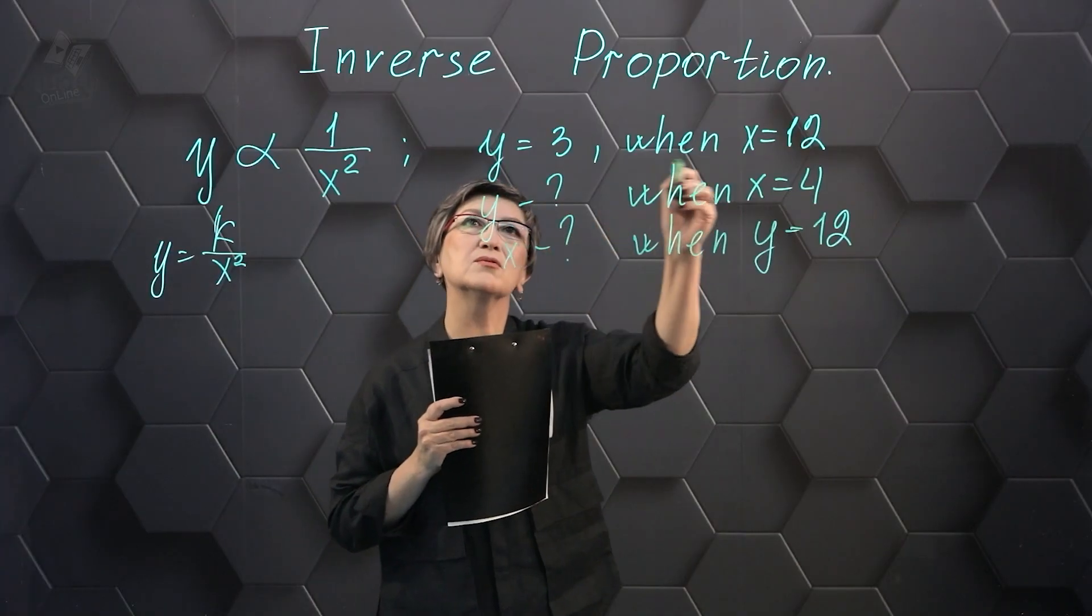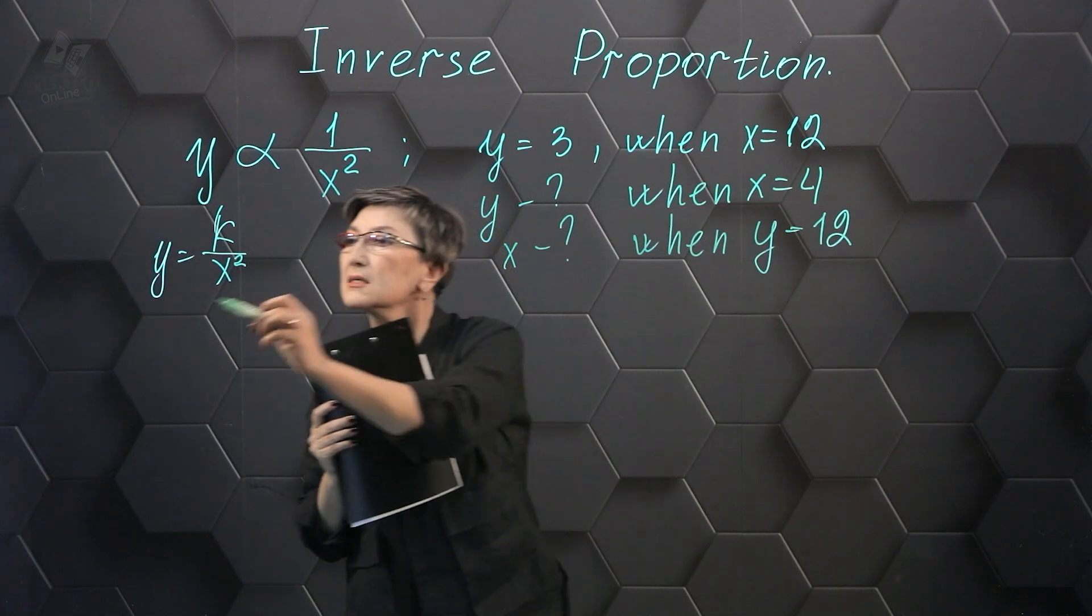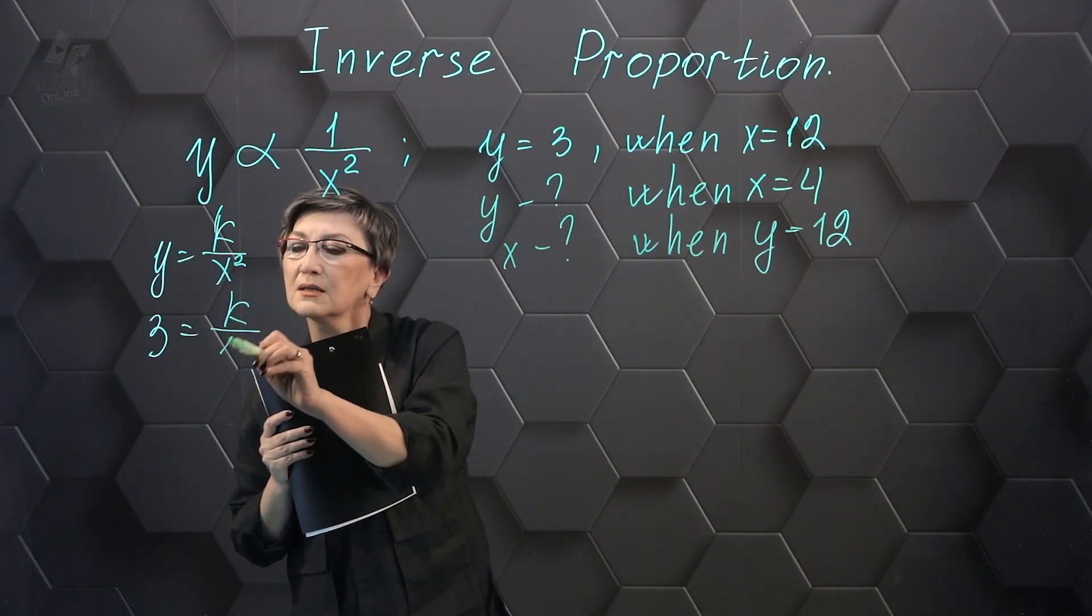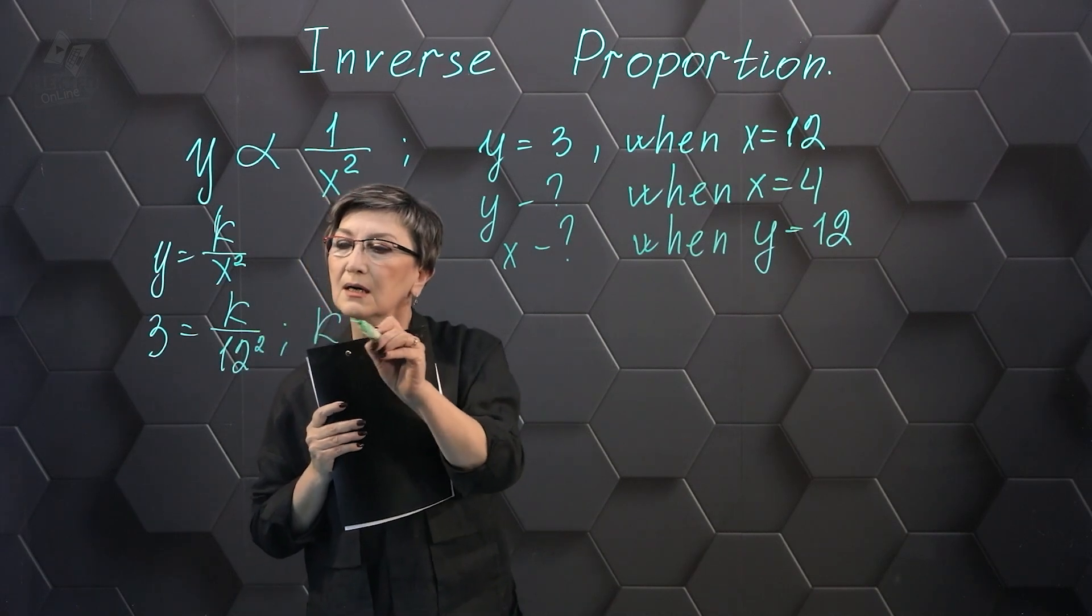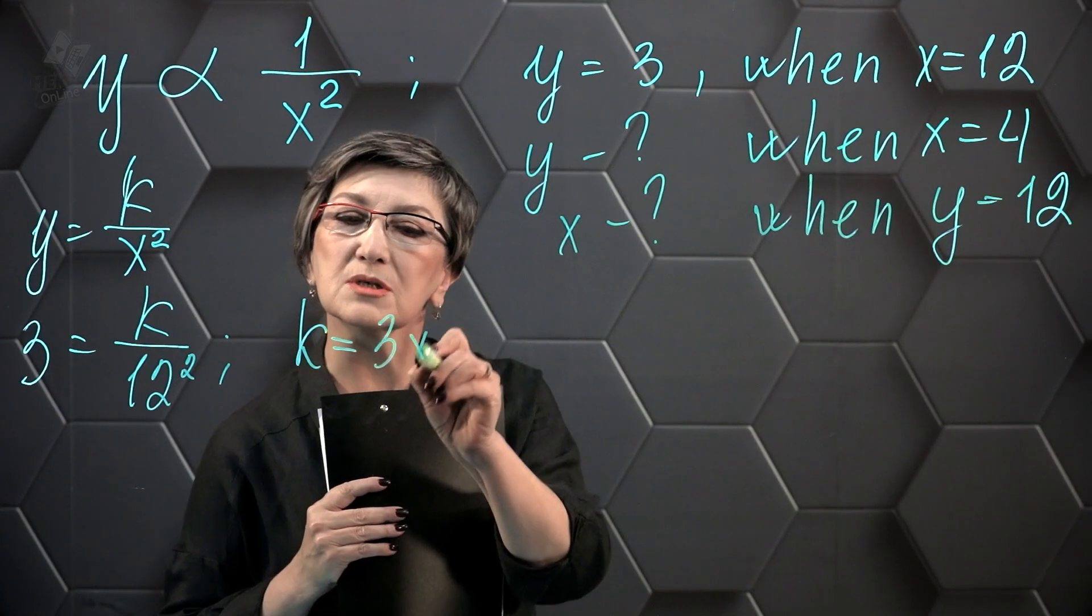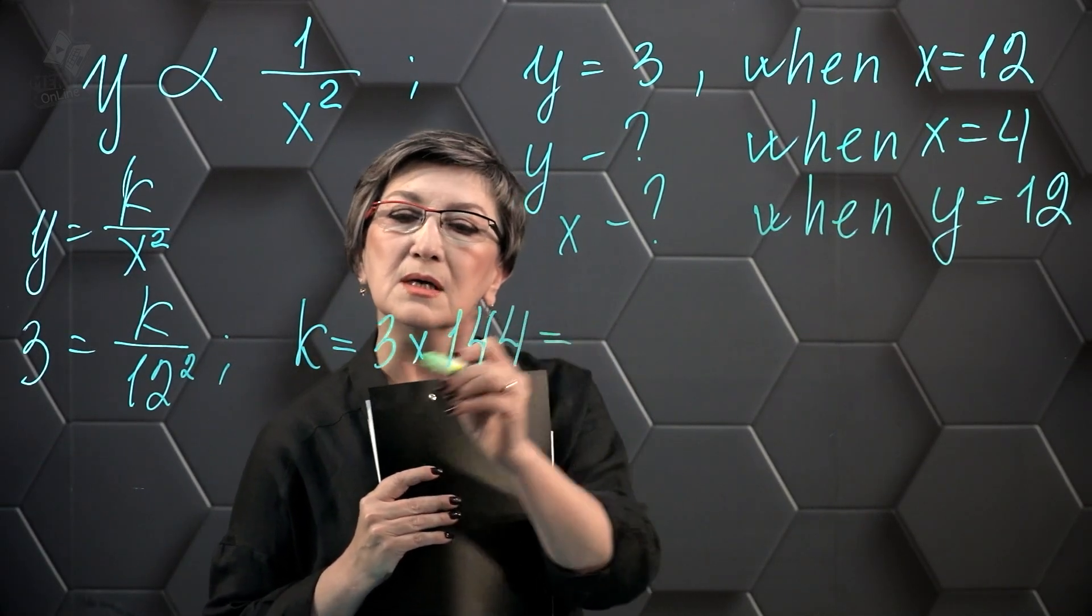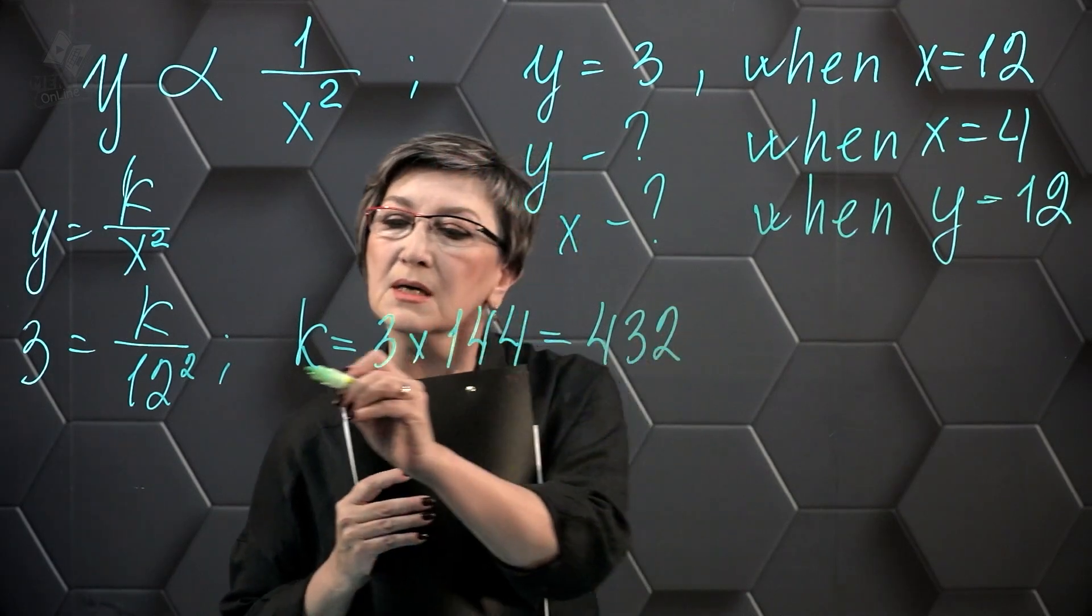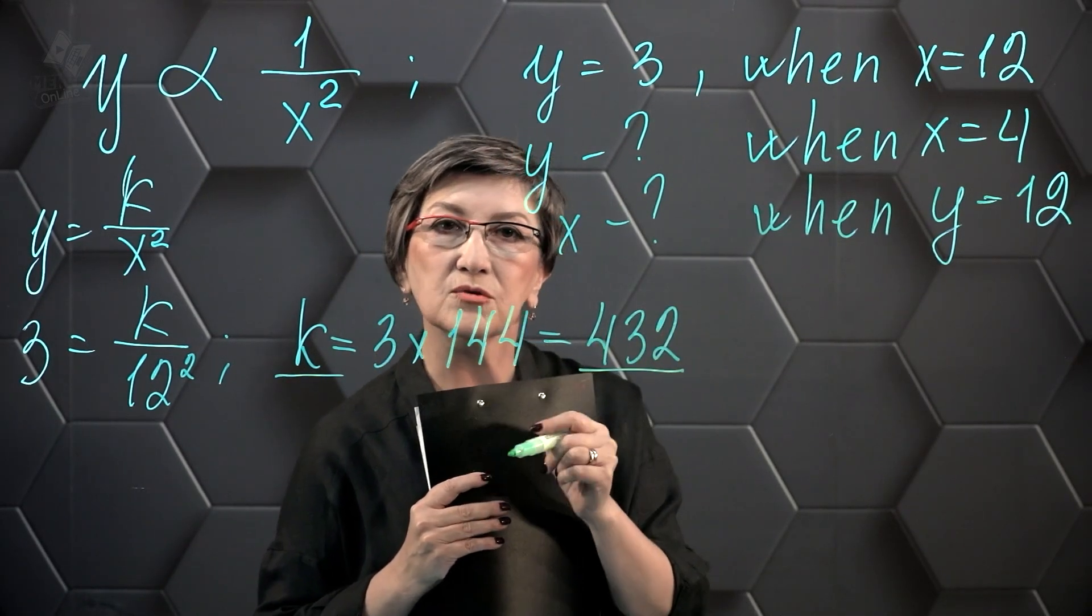Let's use the first condition. Y equals 3 when X equals 12. 3 equals K divided by 12 squared. 12 squared is 144. 3 times 144 is 432. The value of the inverse proportionality factor is 432.